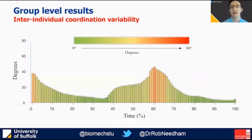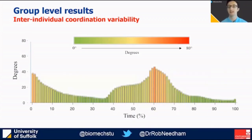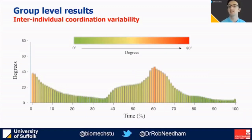However, there are a number of limitations with this approach that need to be acknowledged. For example, we can't tell whether this variation, particularly at the transition, is spatial or temporal in nature. We also see a roughly inverse relationship between inter-data-point range of motion and the coordination variability, due to artefacts when range of motion is low.